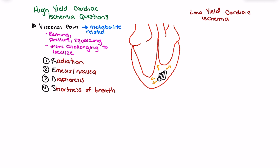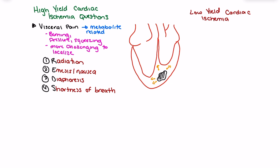Radiation is predictive of ischemic pain because it is metabolite-related. The radiating pain is very similar to visceral pain — it occurs because metabolites are irritating sparsely distributed nociceptors, which can lead to referred pain. Additionally, metabolite release in the surrounding tissues around the heart can activate the autonomic nervous system, leading to emesis or nausea. So radiation and emesis/nausea are both metabolite-related symptoms, indicating not only that tissue is ischemic, but that it is actively releasing metabolites — a good indicator of ischemia.